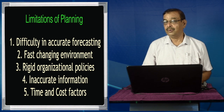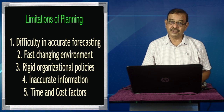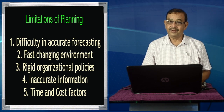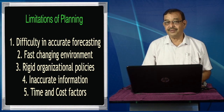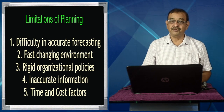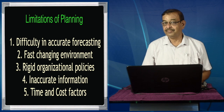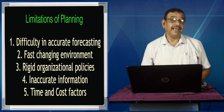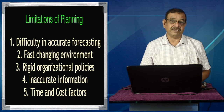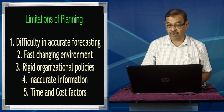Forecasting is that difficult because we plan for the future and the future is highly uncertain. We do not know what is going to happen. Could we think of COVID-19, the situation that has arisen? Two or three years back, everything was normal. Now we are talking about an abnormal situation, a new normal. So the future is very, very uncertain, and difficulty in accurate forecasting is an important and very strong limitation of planning.